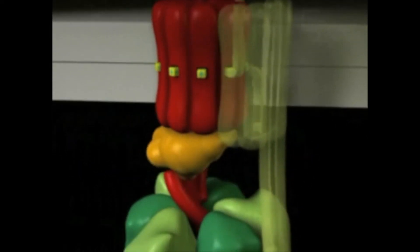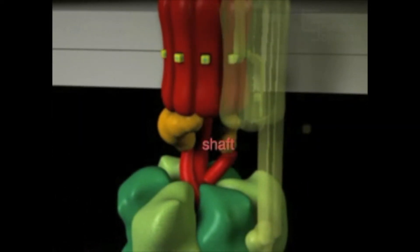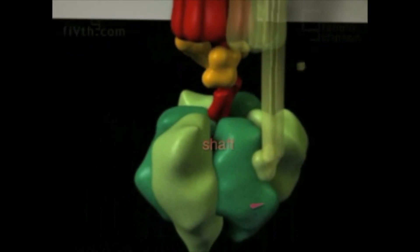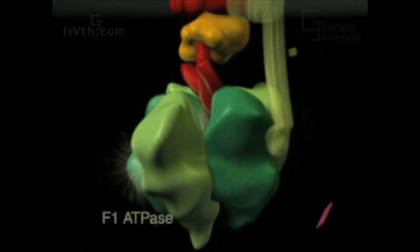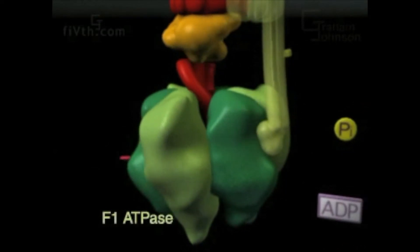The rotational energy is transmitted via a shaft attached to the rotor that penetrates deep into the center of the characteristic lollipop head, the F1 ATPase, which catalyzes the formation of ATP.